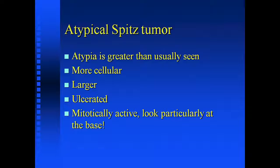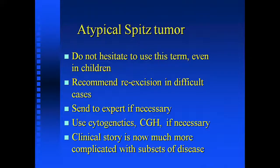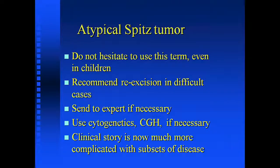The so-called atypical Spitz tumor shows some features of Spitz nevus but is usually larger, more cellular, can be ulcerated, and mitotically active — particularly if mitoses are at the base of the lesion, you should be very concerned. Do not hesitate to use this term, and I don't care if the patient's one year old. It really does result in a problem — when somebody is five years old and you make a diagnosis of an atypical melanocytic lesion, the slide gets sent everywhere. You must recommend re-excision in difficult cases, regardless of age, although on facial skin you have to be more sensitive.